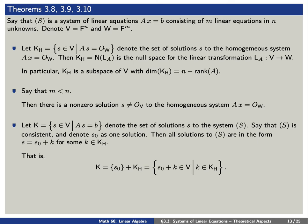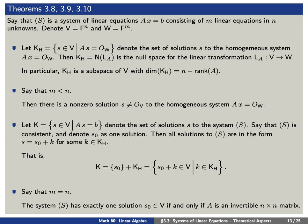Let capital K denote the set of solutions to our system capital S. If the system is consistent with one solution lowercase s sub zero, then all solutions can be expressed in the form s equals s zero plus k, where lowercase k is in K sub H. In particular, if M equals N — the number of equations equals the number of unknowns — then the system has exactly one solution s zero if and only if A is an invertible N by N matrix.